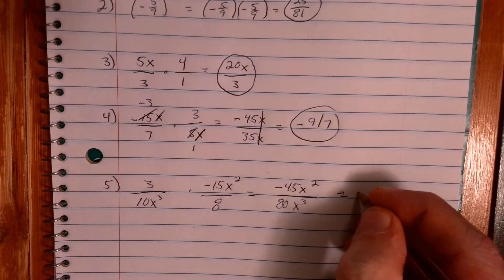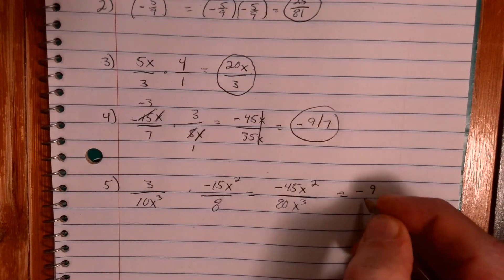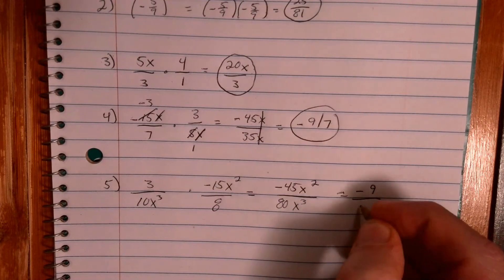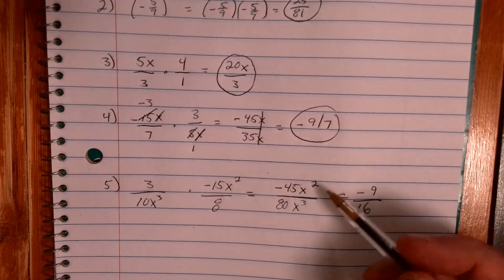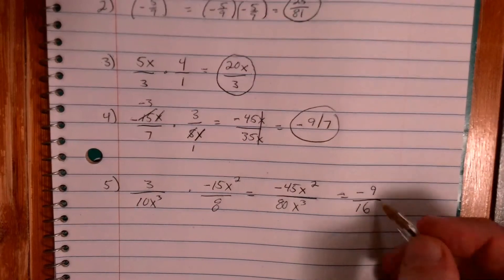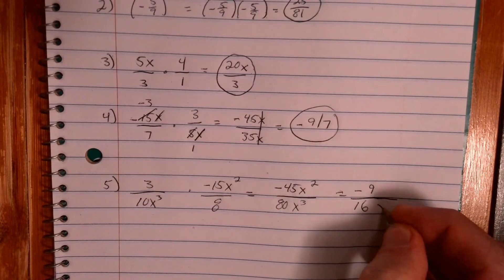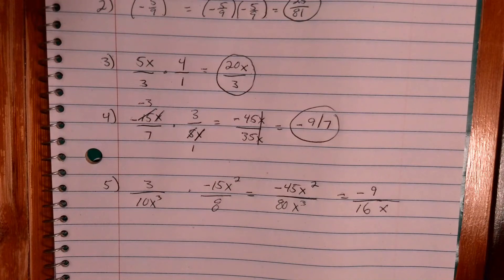So negative 45 and 80, what is that? 5 goes into both of those, so that is negative 9 over, is that 16? So that's negative 9/16. And then I have 2 x's on top, 3 x's on the bottom. I have an extra x on the bottom. Okay, there's your final answer.